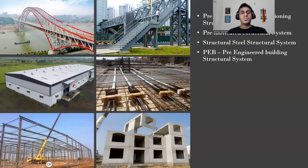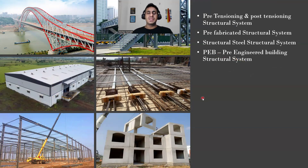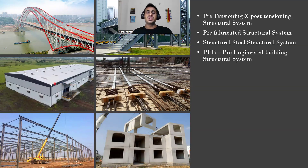Next is the pre-engineered building, or PEB. This is also a steel structure, but uses three-plate sections. You have columns, rafters, roof sheeting, and wall cladding. PEB structures are used for large warehouse spaces — like a Flipkart warehouse — where a normal frame structure is not practical. Large spaces are needed for vehicle movement and goods storage, and that's where pre-engineered buildings are used.